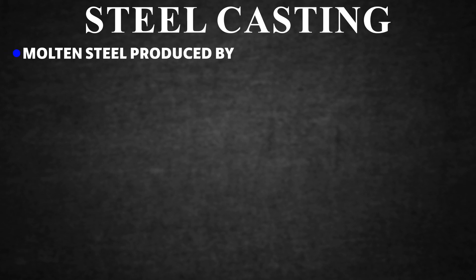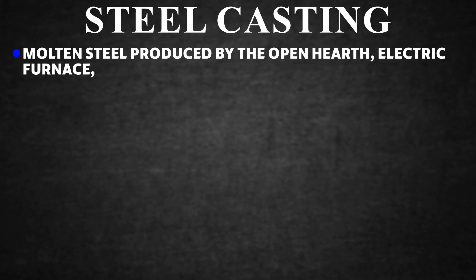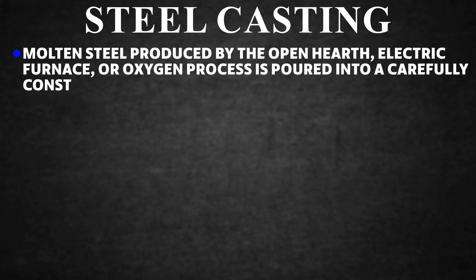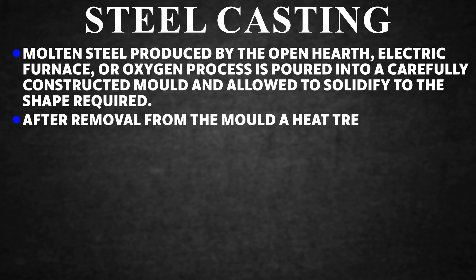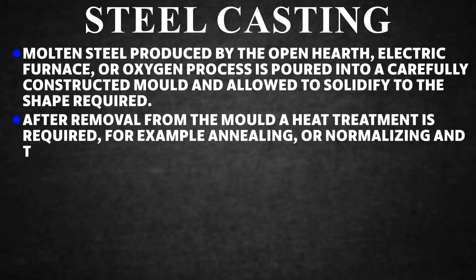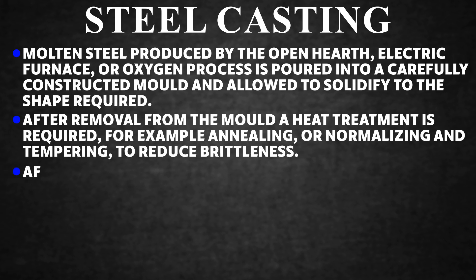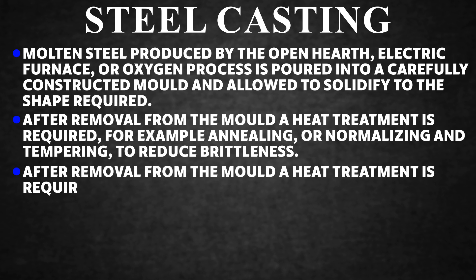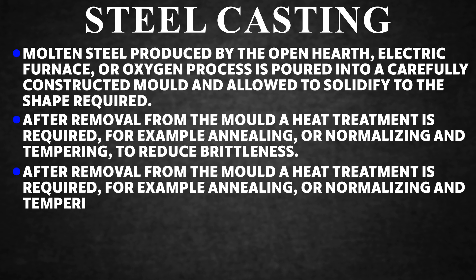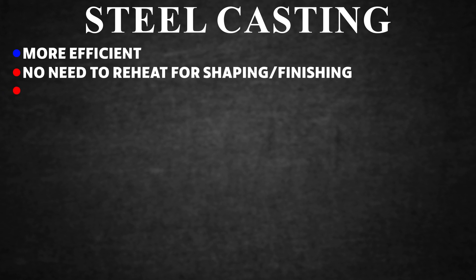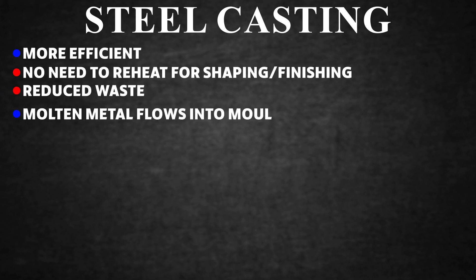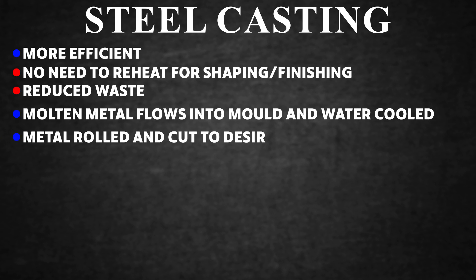Steel Casting. Molten steel produced by the open hearth, electric furnace, or oxygen process is poured into a carefully constructed mould and allowed to solidify to the required shape. After removal from the mould, heat treatment is required — for example annealing, or normalizing and tempering — to reduce brittleness. Stern frames, rudder frames, spectacle frames for bossings, and other structural components may be produced as castings. Continuous casting is more efficient: no need to reheat for shaping; reduced waste as molten metal flows into a mould, is water-cooled, then rolled and cut to the desired length.